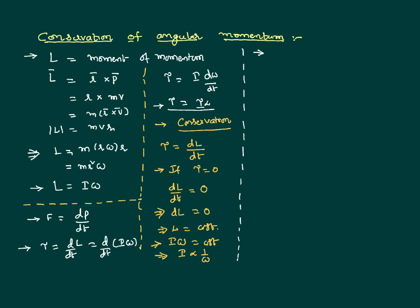Let us see a simple example to explain the conservation of angular momentum. Assume there is a rotating table and a boy is standing on it, keeping his hands and legs close to his body, rotating about an axis passing through his head. Because he is rotating with a certain angular velocity, he has some moment of inertia — using the sigma·mr² formula — based on the distance of his body particles from the axis of rotation.